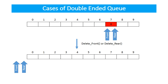Just like the first insertion is a special case, similarly, the last element deletion is also a special case which we have to handle. The last element is detected when front and rear are at the same index — this means there is only one element left. If you are going to delete this element, you have to reset the value of front and rear to minus one. Either you can call delete front or delete rear — the same operation will be performed.